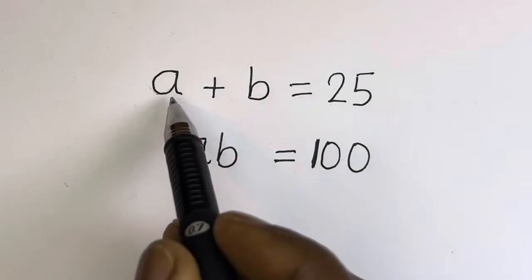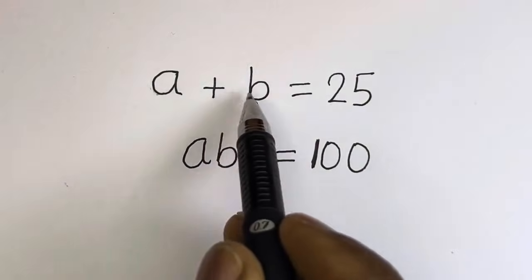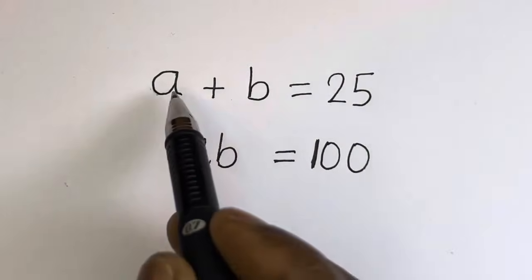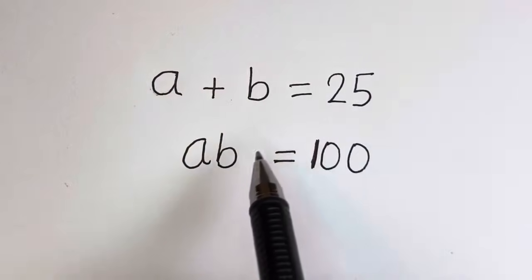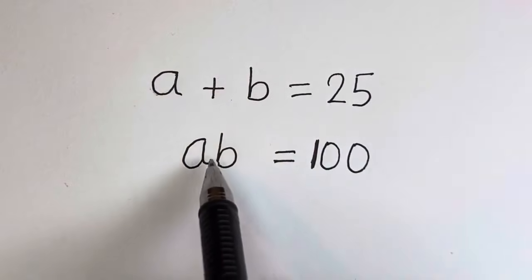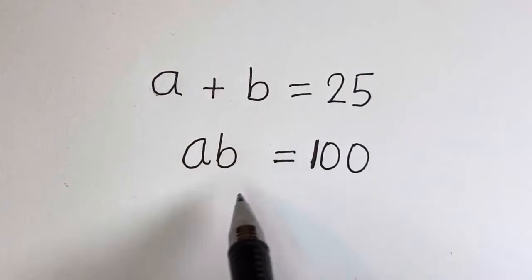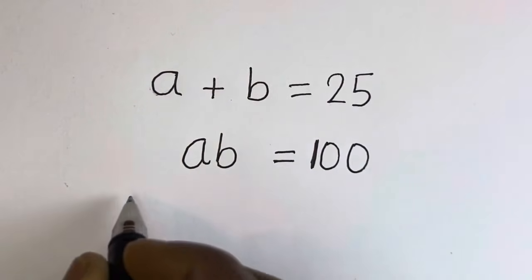Hello. How to solve for A and B in this equation: A plus B is equal to 25, AB is equal to 100. Solution.